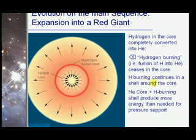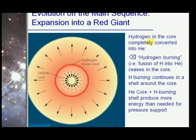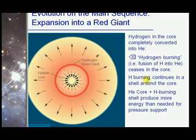Evolution away from the main sequence is usually caused by the expansion of the star into a red giant. This happens because hydrogen in the core is completely converted to helium. Hydrogen burning then continues in a shell around the core, and the helium core plus hydrogen burning shell produce more energy than needed for pressure support, causing the star to expand into a red giant.